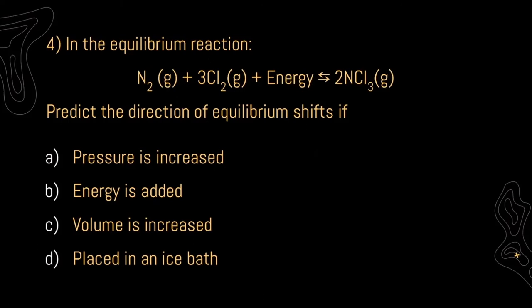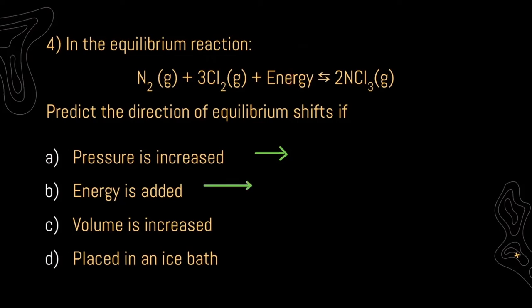For our next reaction, we are working with nitrogen gas and chlorine gas to form nitrogen trichloride. To see what happens when we change our pressure, let's see how many moles we have. For our reactants, we have four moles in total. For our products, we have two moles in total. Our reactants would benefit most from an increase in pressure — more moles means more collisions, so increasing pressure is going to shift our reaction to the right, making more product. If we add more energy, energy is on our reactant side, so it's going to shift our equilibrium towards our products, to the right. If we increase our volume, we have four moles in our reactants versus two moles in our products, so it'll shift our reaction towards the left. Lastly, if we place it in an ice bath, we are lowering the energy in our system, shifting our reaction towards our reactants, to the left.